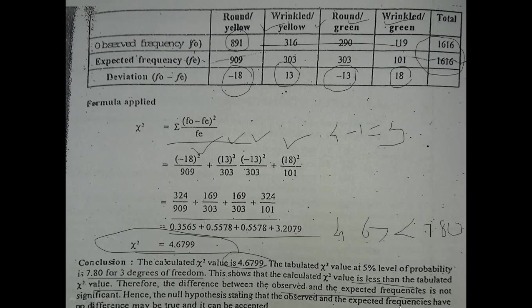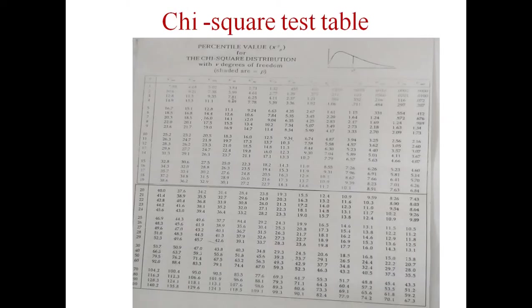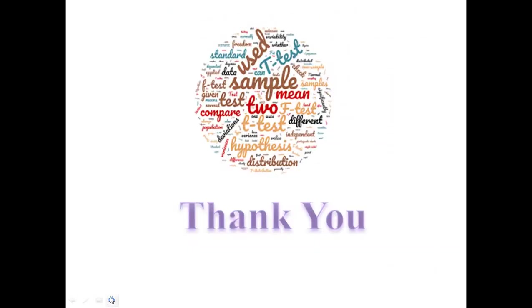The null hypothesis stating that observed and expected frequencies have no significant difference is accepted. This is how the chi-square test is applied for both monohybrid and dihybrid crosses. The chi-square table is similar to the t-test table, with degrees of freedom in rows and significance levels in columns. By using the specific degree of freedom, you get the significance level values, and you finalize your decision by comparing the calculated and tabular values.